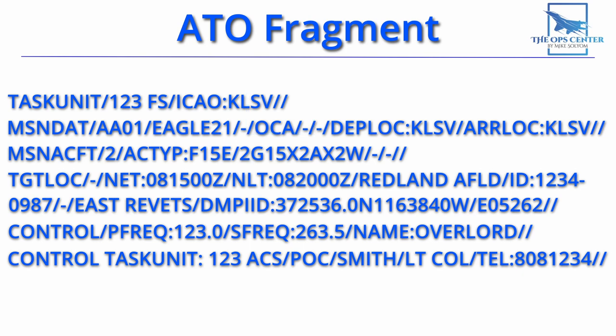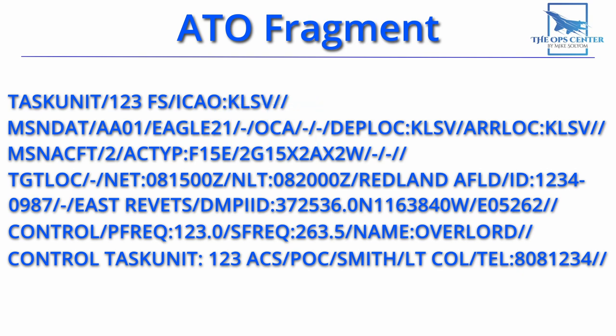If you don't see that double slash, it means the line is continued below. Next we see the mission data line — this is the name of the mission, with the two letters indicating the day of the operation. AA is the first day, AB would be the second, and so on. 01 makes this the first mission of the day. Eagle 2-1 will be the flight's call sign. Whenever we see a dash, it just means that the field was left intentionally blank. OCA stands for Offensive Counter-Air and it's the type of mission. Here we see the mission will depart and arrive back at Nellis.